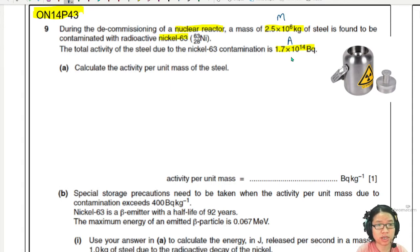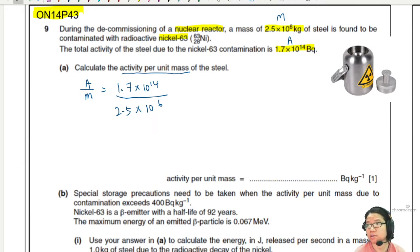Calculate activity per unit mass. It's just divided only. A divided by M. So activity 1.7 times 10 to the power of 14. Please at least show this one. 2.5 times 10 to the power of 6. So 1.7, 2.5. Get 0.68. So it's 6.8 times 10 to the power of 7.